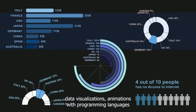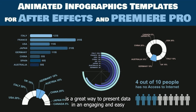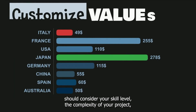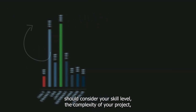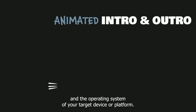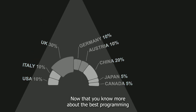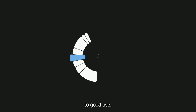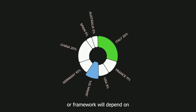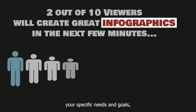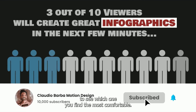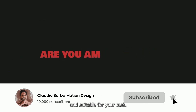So creating data visualizations and animations with programming languages is a great way to present data in an engaging and easy to understand way. When choosing which programming language to use, you should consider your skill level, the complexity of your project, and the operating system of your target device or platform. Now that you know more about the best programming languages for data visualization and animation, it's time to put your newfound knowledge to good use. Ultimately, the best choice of language or framework will depend on your specific needs and goals, as well as your existing skills and experience. It's worth experimenting with different options to see which one you find the most comfortable and suitable for your tasks.